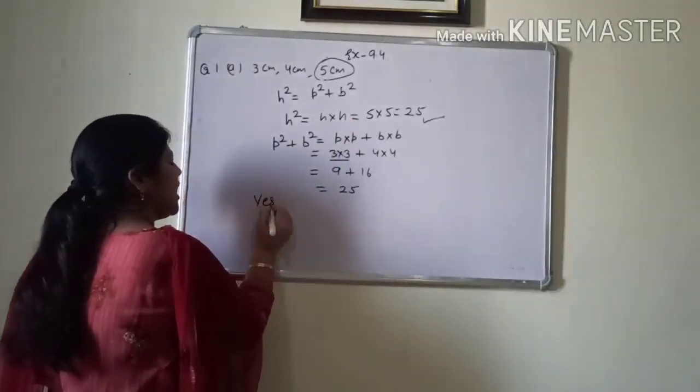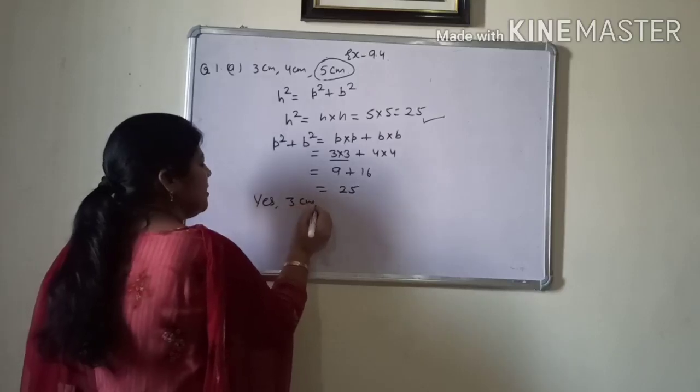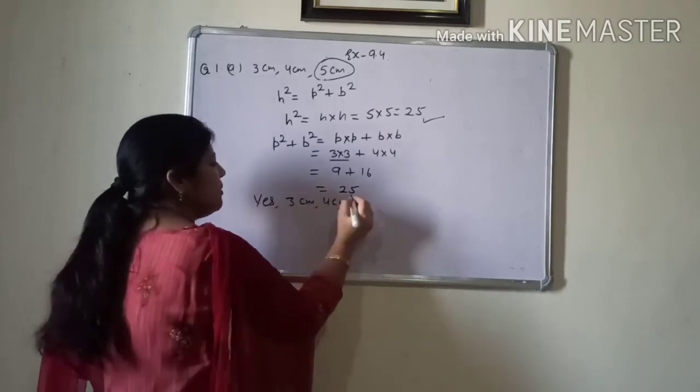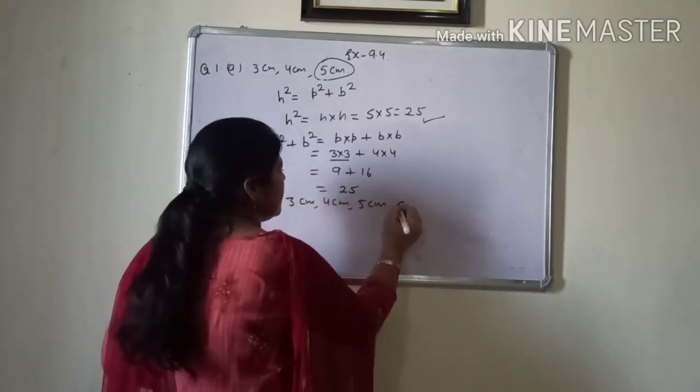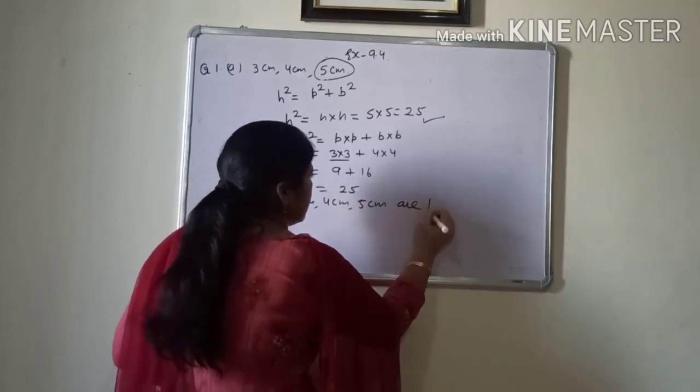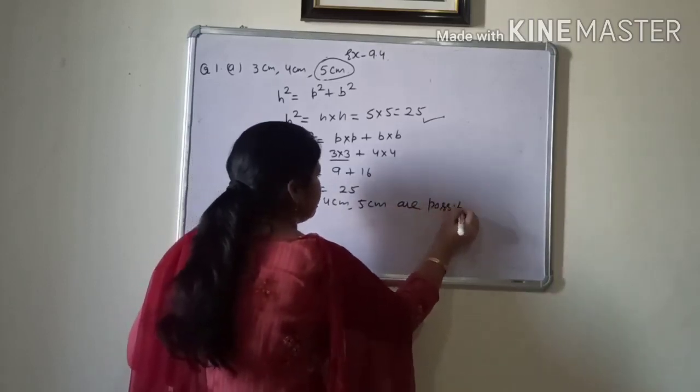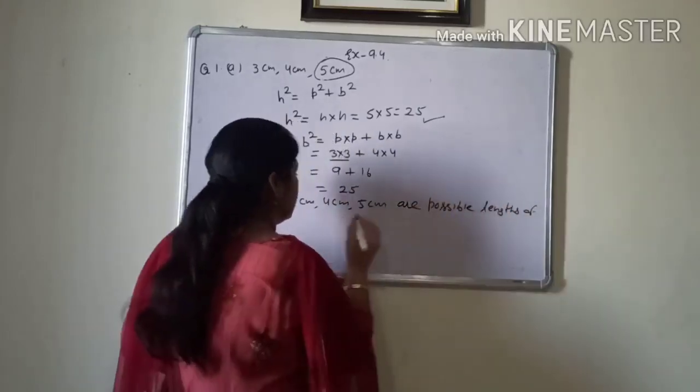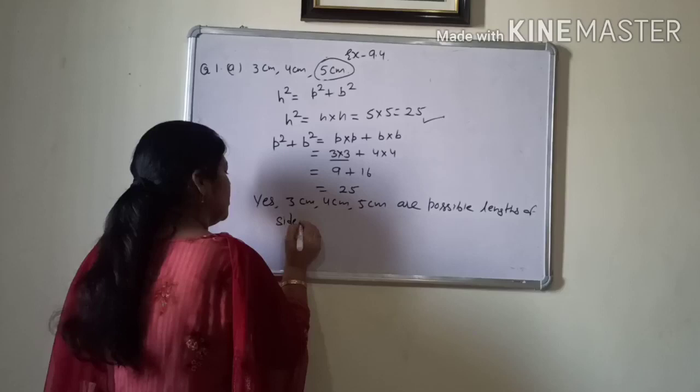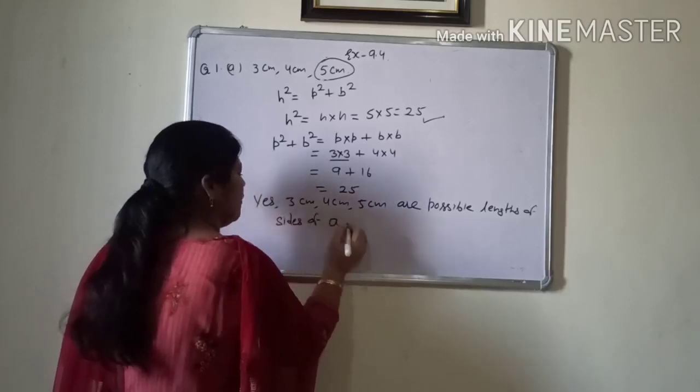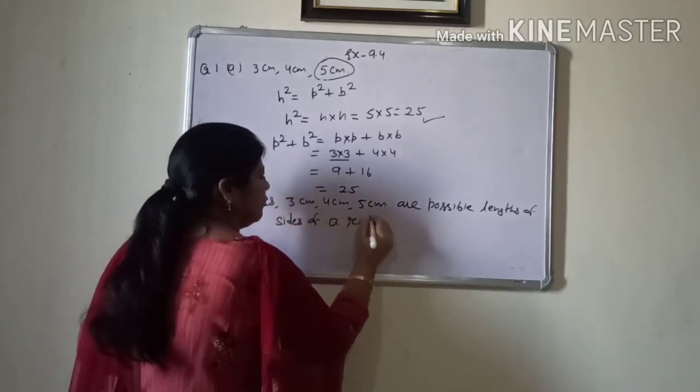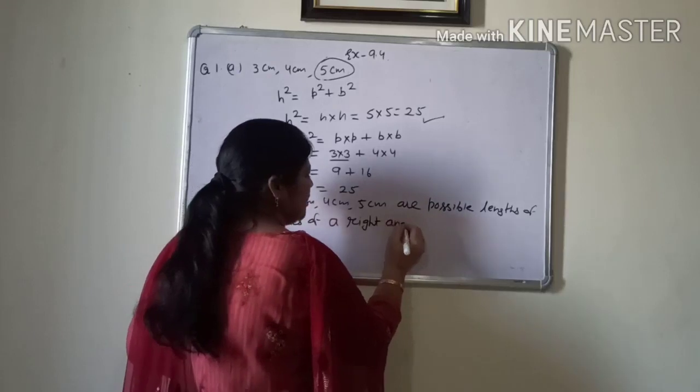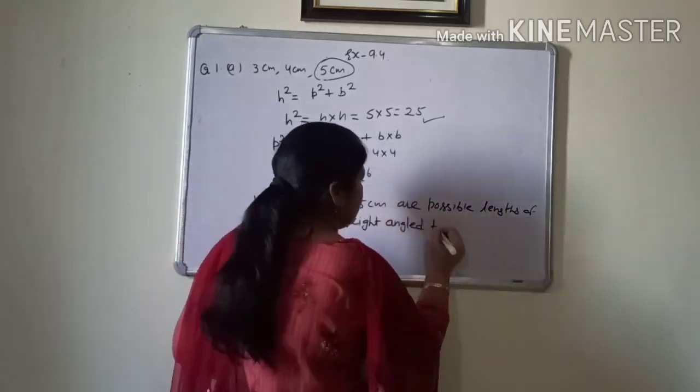So, you will write yes. 3 cm, 4 cm and 5 cm are the possible length of sides of right angle triangle.